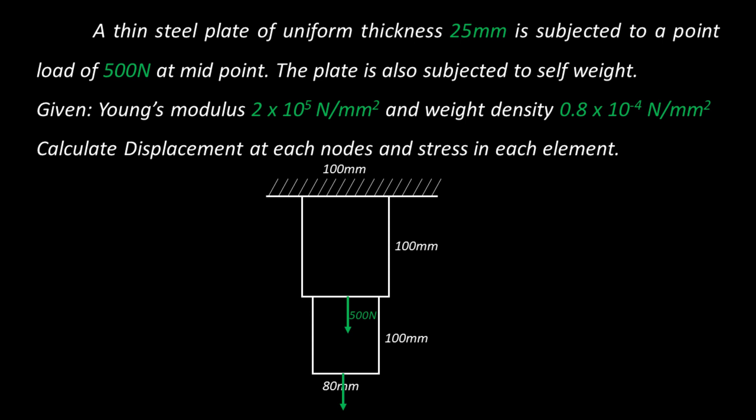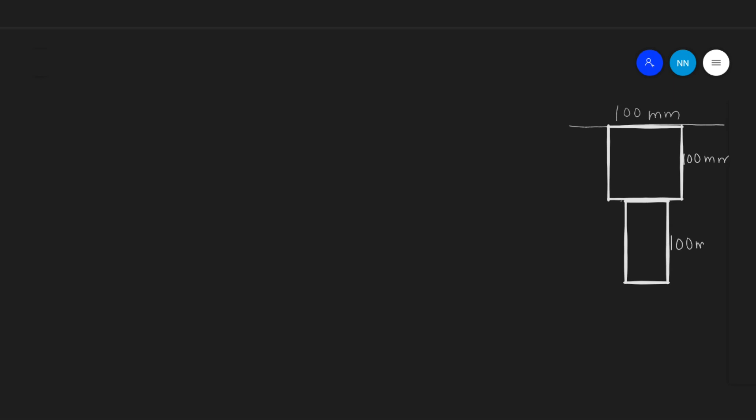Let's take a finite element analysis of a beam with self-weight. A thin steel plate of uniform thickness 25mm is subjected to a point load of 500N at the midpoint. The plate is also subjected to self-weight. The given data is: Young's modulus 2 × 10⁵ N/mm², weight density 0.8 × 10⁻⁴ N/mm³. Find the displacement at each node and stresses in each element. Let's discretize the whole beam into finite elements. We have the dimensions.